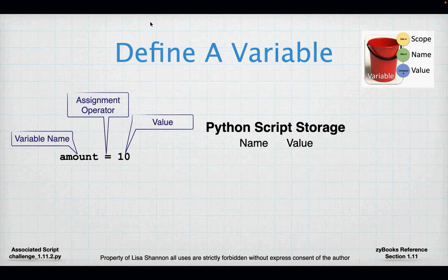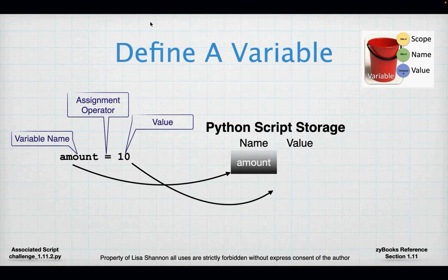When Python sees that line of code, it says: I have a name called 'amount' and I have a value for amount called 10. Underlying in Python, it keeps a table in memory of every single variable, its name, and its current value — whatever value it is at the time. Because values can change in variables. So with amount equal 10, what's really happening on the computer is I've just taken up space in the computer with this variable and that value.